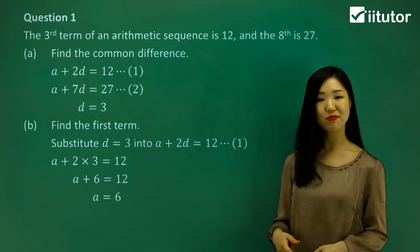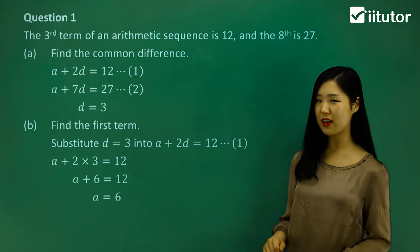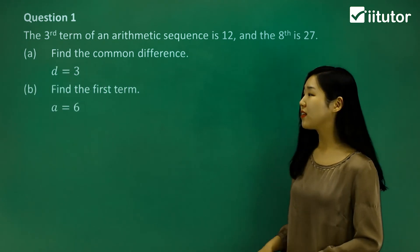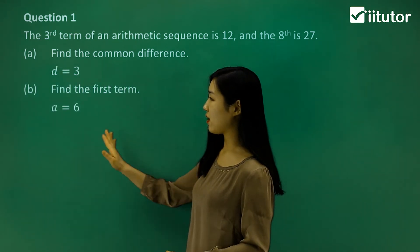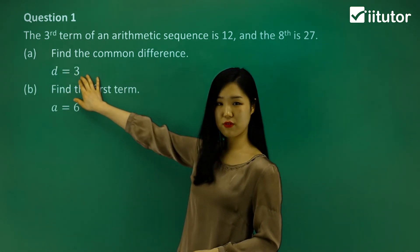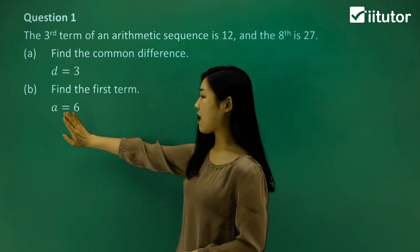How simple was that? Just using simultaneous equations. Let's summarize everything. In the first part we found the common difference was 3. In the second part we found the first term was 6.